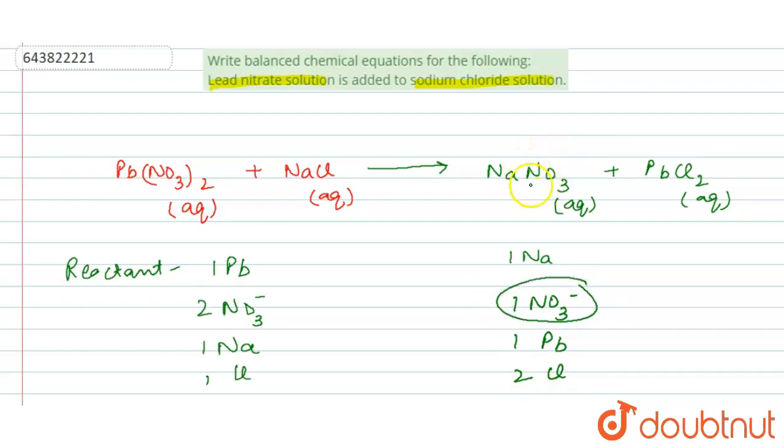So in sodium nitrate we will write 2 here and to balance this sodium we will write 2 NaCl. Now you can see that two chloride ions are present on both sides. This equation is completely balanced.